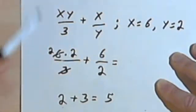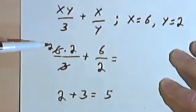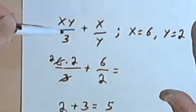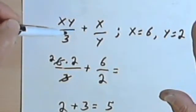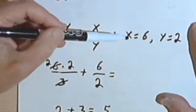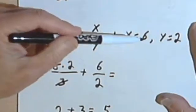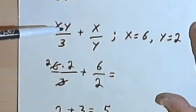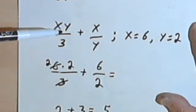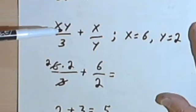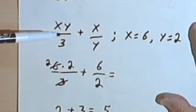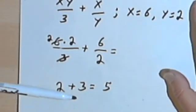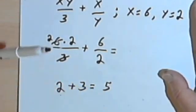Obviously these things can get more and more complicated — we can have bigger and longer expressions. But the main idea is that whenever you are told what your variables equal, like x equals 6 or y equals 2, you plug those numbers in where the variables are. Be careful for variables that equal a negative number, and then you follow your order of operations and figure out what everything comes out to.